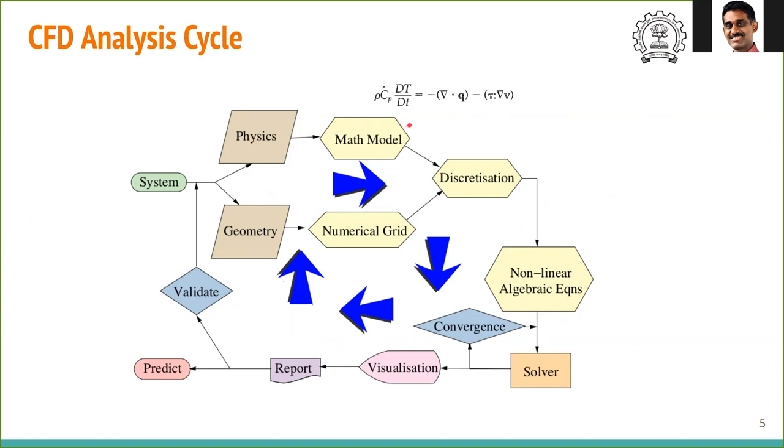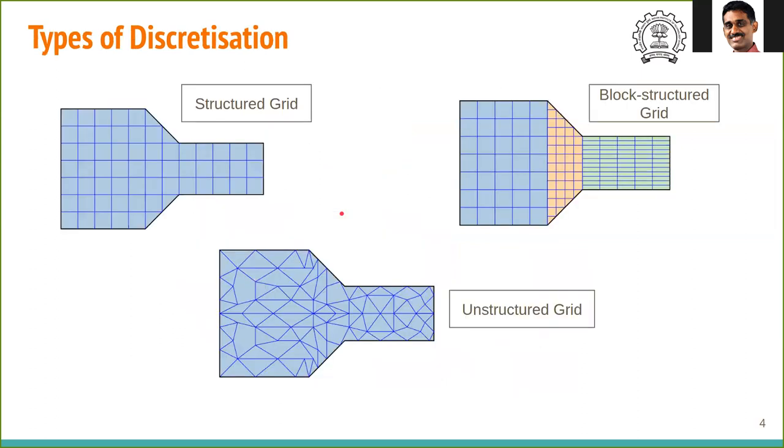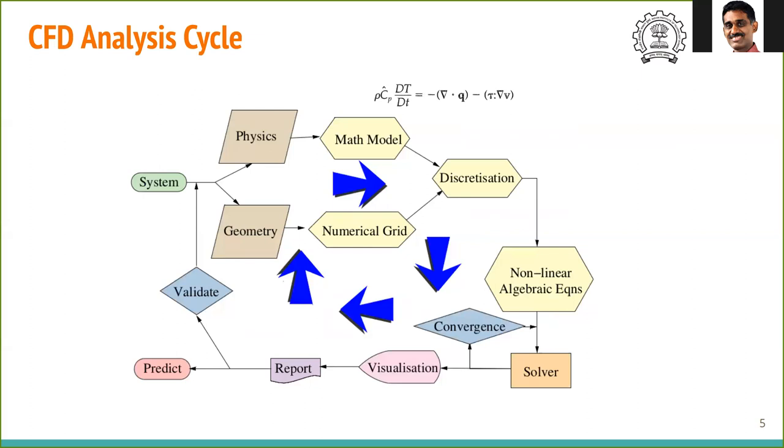For geometry, we identify the numerical grid - something like this. One of these grids, whichever is convenient, we identify for the numerical grid. Once we have the model and grid, CFD algorithms automatically do the discretization. Once you define these, it discretizes all variables - T, v, and so on.